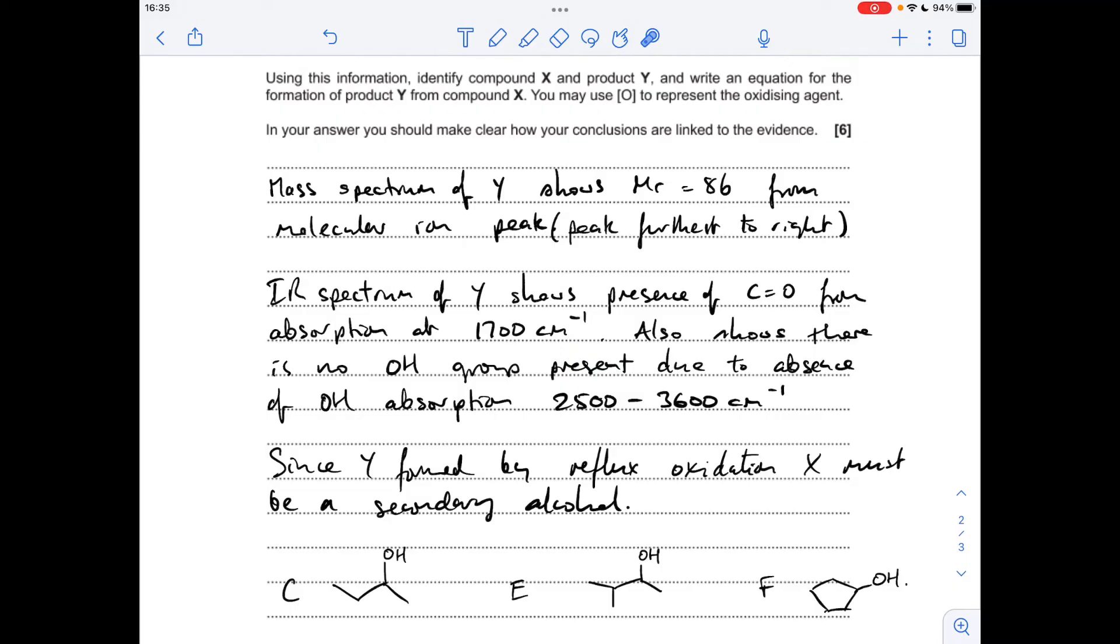Okay, so I've tried to summarize that as an answer so far. We're not finished yet, but so far what can we say? The mass spectrum of Y shows that the MR is 86. That's from the molecular ion peak or the peak furthest to the right. And then the infrared spectrum of Y shows the presence of a C double bond O from that absorption at 1700 centimeters to minus 1.